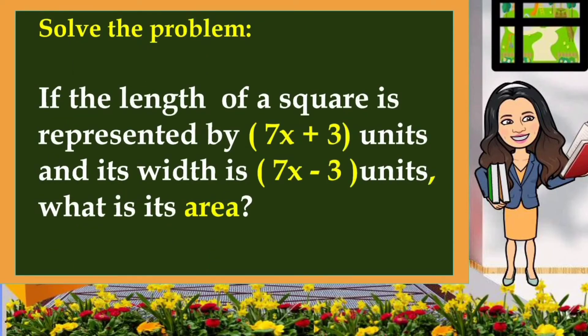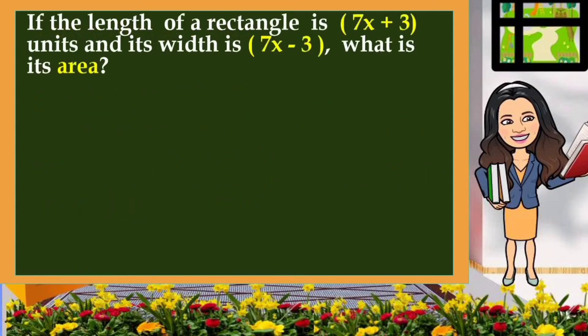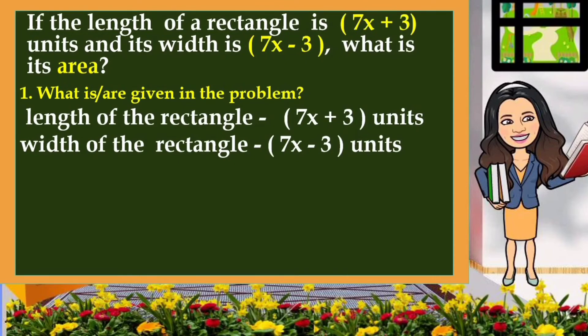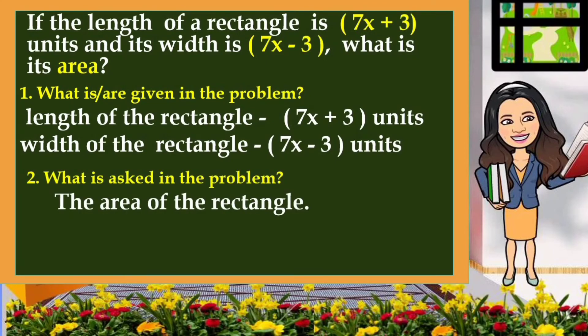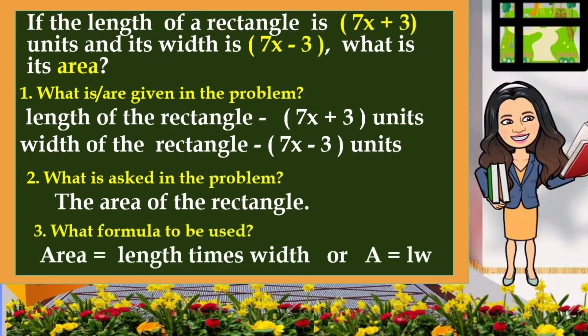Let us solve a certain problem. If the length of a rectangle is represented by 7x plus 3 units and its width is 7x minus 3 units, what is its area? The first step is identifying what is given: the length is 7x plus 3 units, and the width is 7x minus 3 units. Next, what is asked: the area of the rectangle. Third step, the formula to use: area is equal to length times width, or A equals LW.